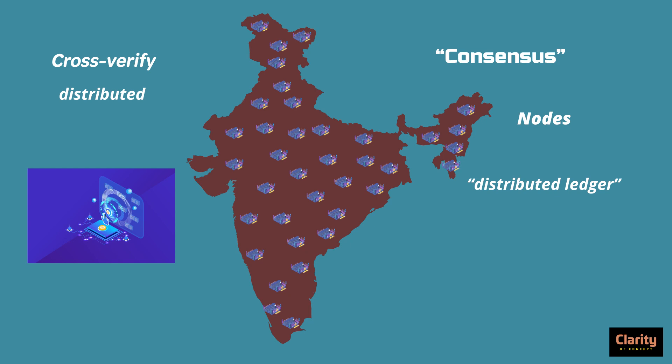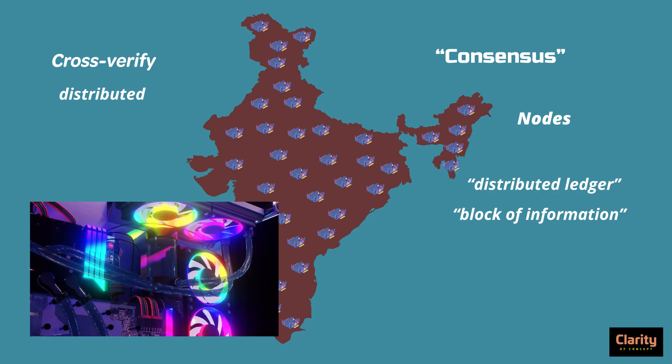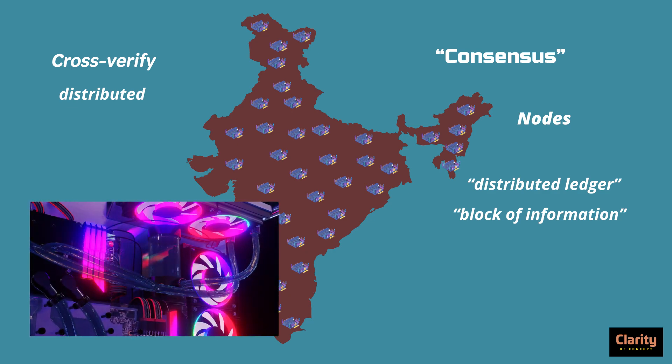The same transaction records are available at every node. When a new transaction takes place, it has to be updated in all ledgers of all these nodes. This new information to be updated is called an informational block. This block has to be added across all node ledgers, which is technically a complex task. To maintain its accuracy and keep all ledgers correct, complex mathematical puzzles have to be solved by high-end computers. It consumes a lot of electricity.